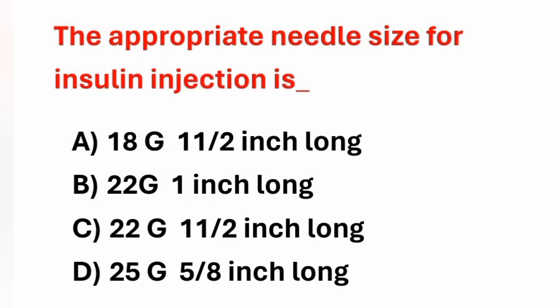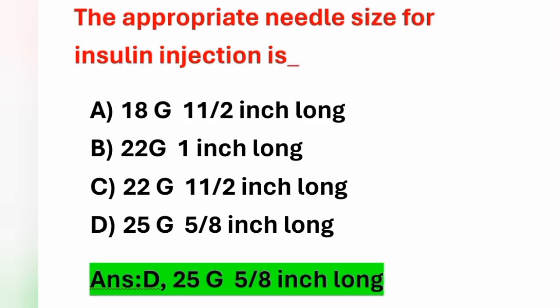Next question: The appropriate needle size for insulin injection is? Options: A) 18 gauge, 1½ inch, B) 22 gauge, 1 inch, C) 22 gauge, 1½ inch, D) 25 gauge, 5/8 inch. Needle size for insulin injection is 25 gauge, 5/8 inch — Option D. Insulin injection is given subcutaneously using a 1 ml syringe containing 40 or 80 units. The needle size is 25 gauge, ½ to 5/8 inch in length.